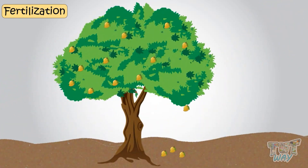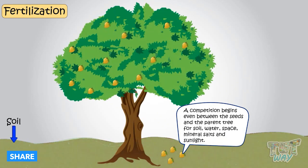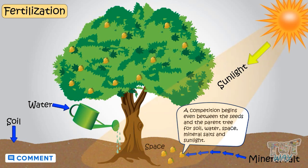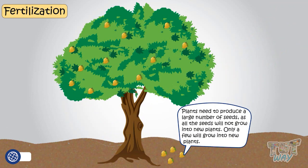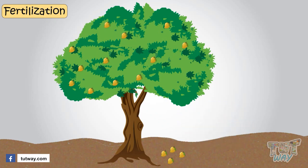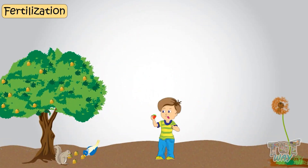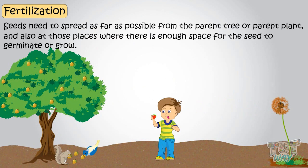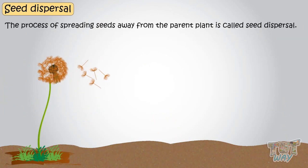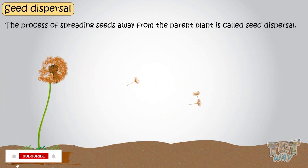Many seeds fall from the trees, and there begins a competition among the seeds, and even between seeds and the parent tree for soil, water, space, mineral salts, and sunlight. So plants need to produce a large number of seeds, as not all seeds will grow into new plants — only a few will. Some seeds are eaten away by birds or animals, some are destroyed by wind or rain, and some seeds are even eaten by human beings. So seeds need to spread as far as possible from the parent tree or plant, and also at places where there is enough space for the seed to germinate or grow.